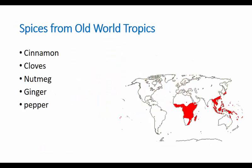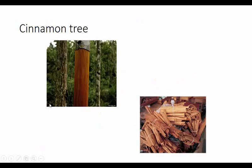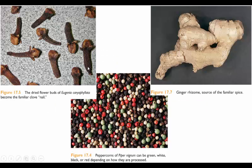All of this came from the demand for old world spices. The spices we'll talk about are cinnamon, cloves, nutmeg, ginger, and black pepper — the peppercorns you put in a pepper grinder. Cinnamon is a bark from a very large tree — one of the first perennial plants we've talked about. Cloves and peppercorns come as fruits from plants that are then dried and ground to use as a spice.